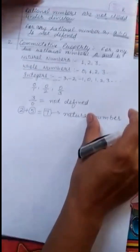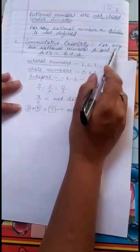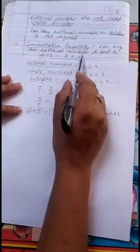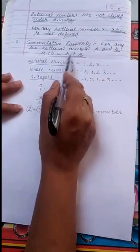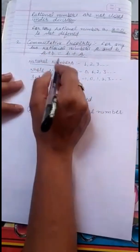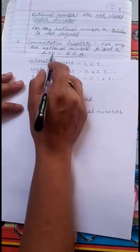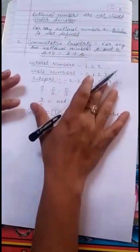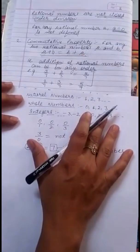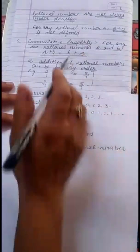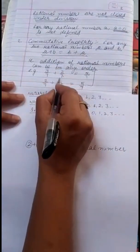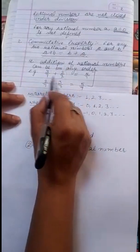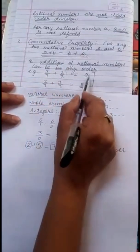Now the next property is Commutative Property. For any two rational numbers A and B, A plus B is equal to B plus A — that is, we can do the addition in any order. Taking two rational numbers 3 by 7 and 2 by 7, their sum is 5 by 7.